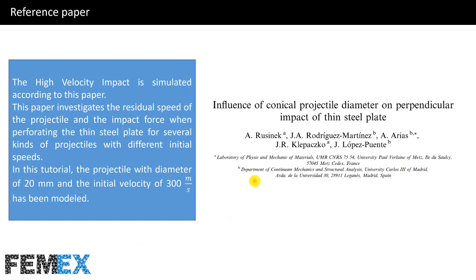The high velocity impact is simulated according to this reference paper. This paper investigates the residual speed of the projectile and the impact force when perforating the thin steel plate for several kinds of projectiles with different initial speeds. In this tutorial, the projectile with diameter of 20 mm and the initial velocity of 300 m per second has been modeled.